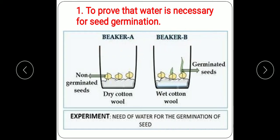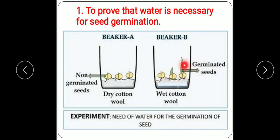The first experiment is to prove that water is necessary for seed germination. We will take two beakers — beaker A and beaker B. In beaker A we will place dry cotton wool, and in beaker B we will place wet cotton wool. We will then place some seeds on the dry cotton wool in beaker A and an equal amount of seeds on the wet cotton wool in beaker B. We will keep this setup for two days at normal temperature.